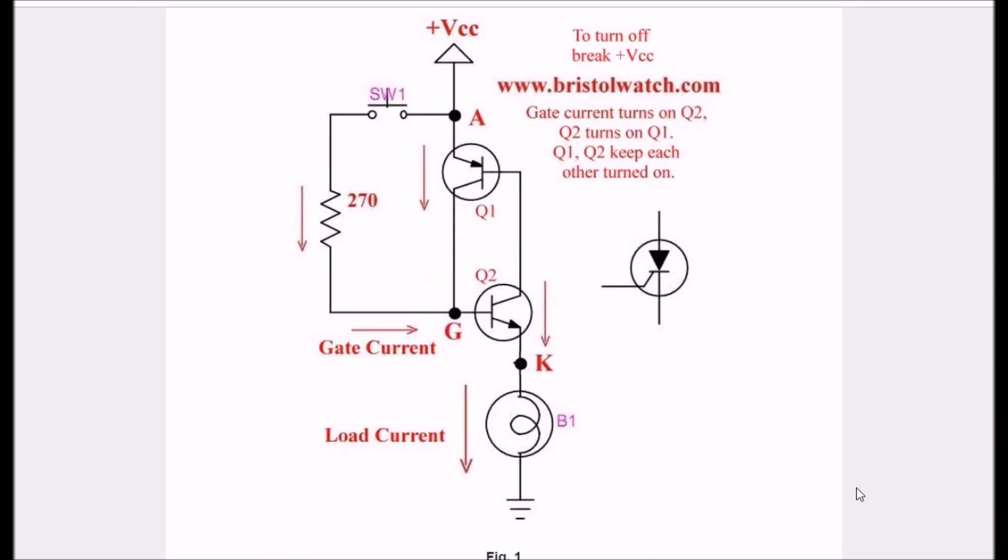A quick review on how SCRs work. An SCR can be thought of as two transistors, a PNP and an NPN, connected as shown here. The anode goes to the positive side of the supply and the cathode goes to the negative supply. And here is my load. When I press SW1, a small gate current will flow into Q2, the NPN, and I will have a gate current from the base-emitter turning on Q2.